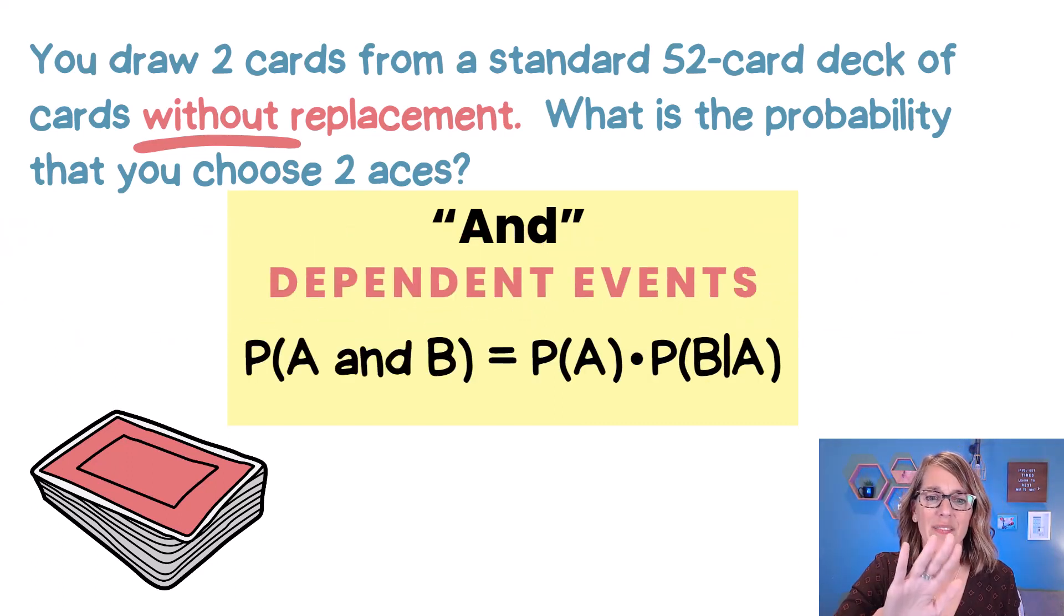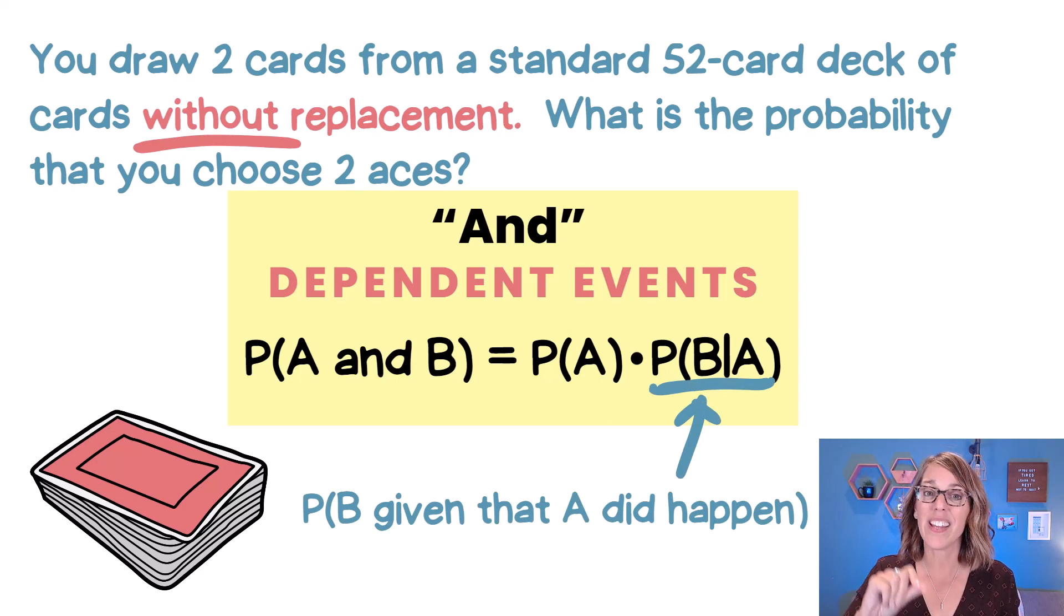Here is that variation. It's going to be the probability of A times the probability of B, given that that first draw did happen.